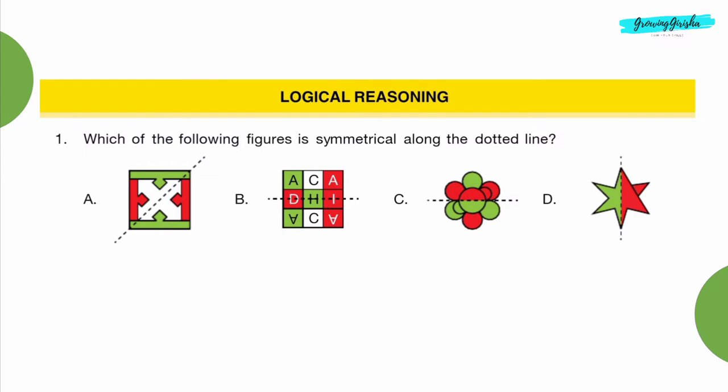Logical Reasoning. Question 1: Which of the following figures is symmetrical along the dotted line? Option B.